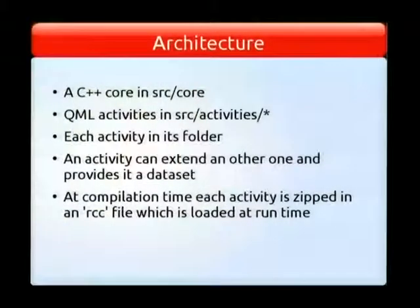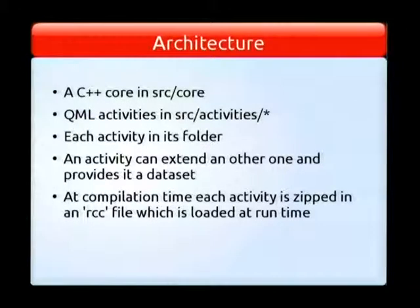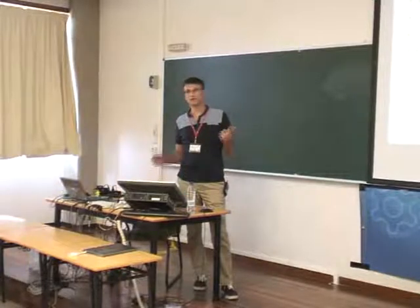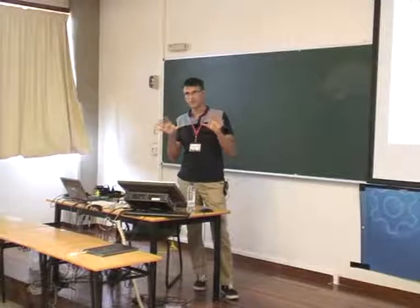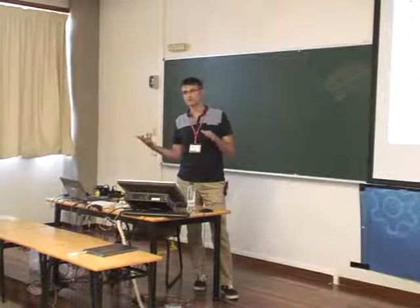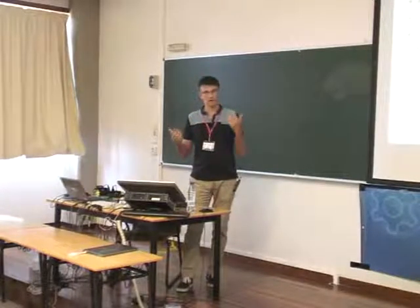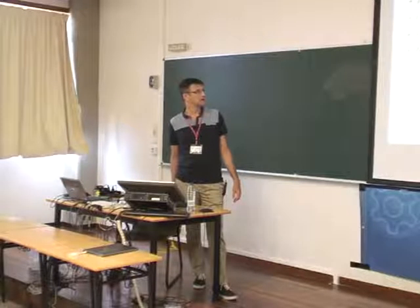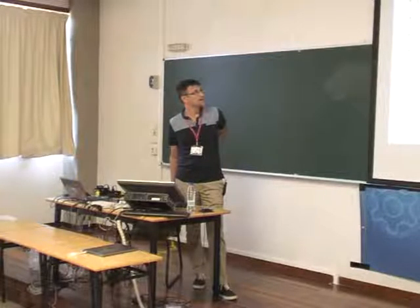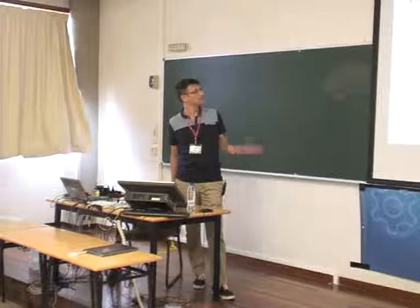The build system is CMake, so it's easy to develop like a regular Qt application. The architecture has a C++ core in the src/core directory. All the QML activities have a specific folder and are zipped into RCC files, which are loaded at runtime by the core. The design is quite modular and easy to extend. In a bundle you have a binary executable, one RCC per activity, and one RCC per translation. GCompris loads all of this at runtime, so it's very clean at the distribution level.